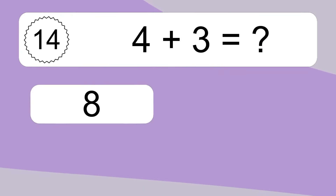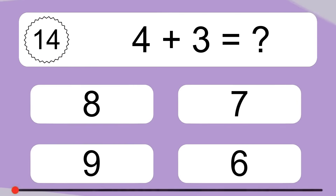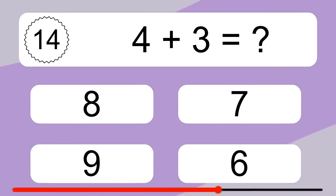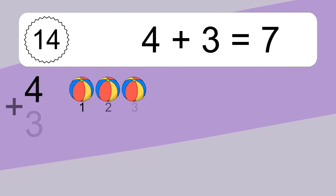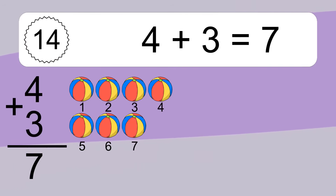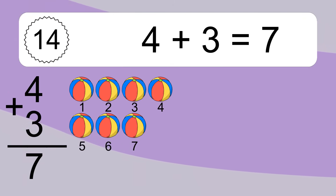4 plus 3 equals what? 4 plus 3 equals 7. Let's count it: 1, 2, 3, 4, 5, 6, 7.